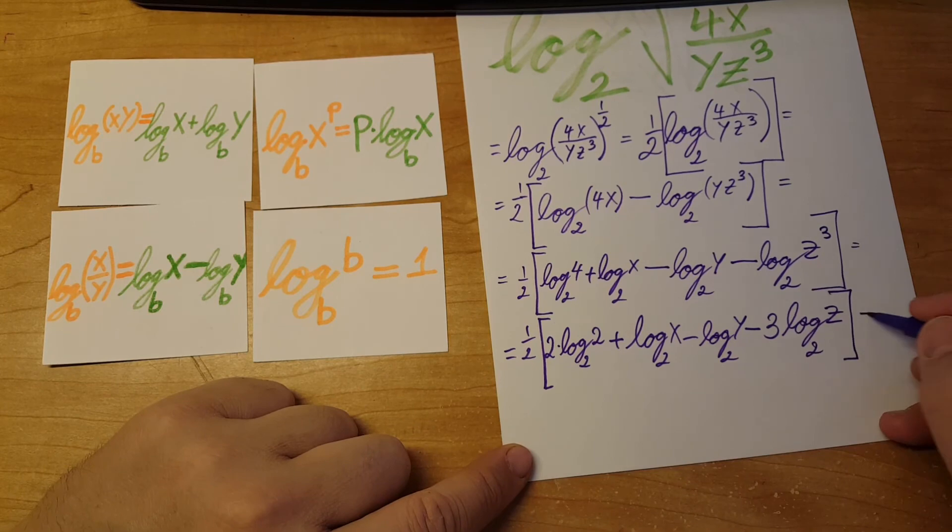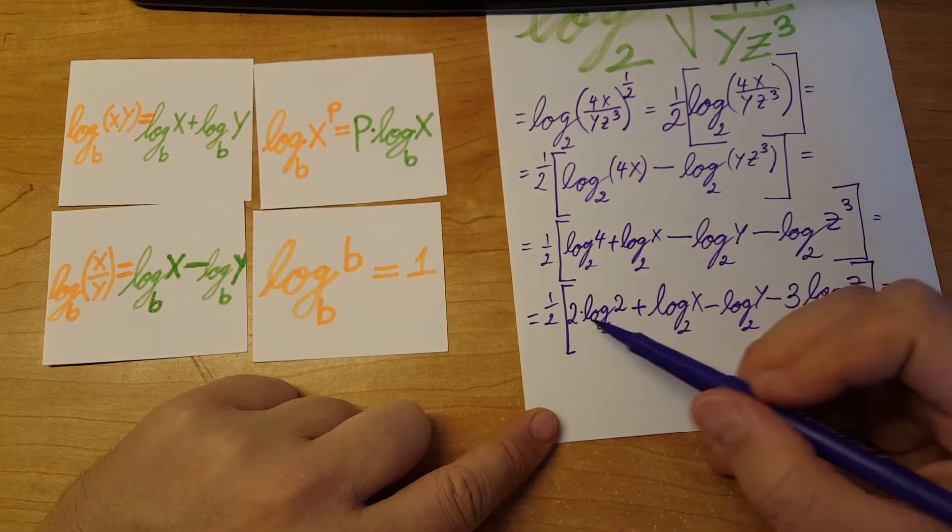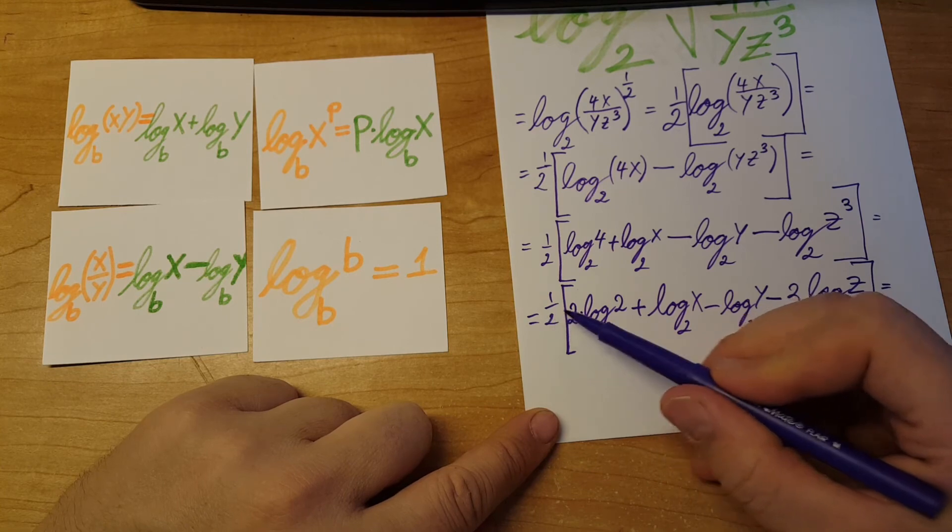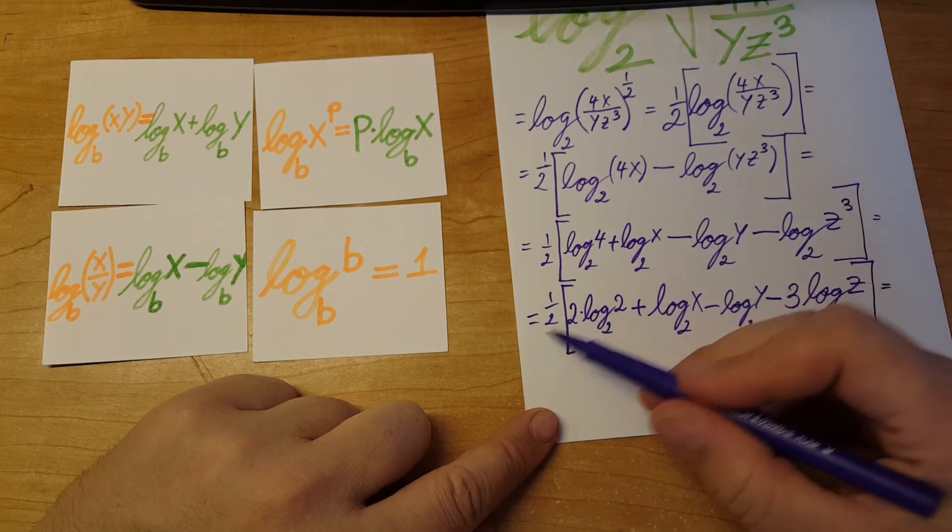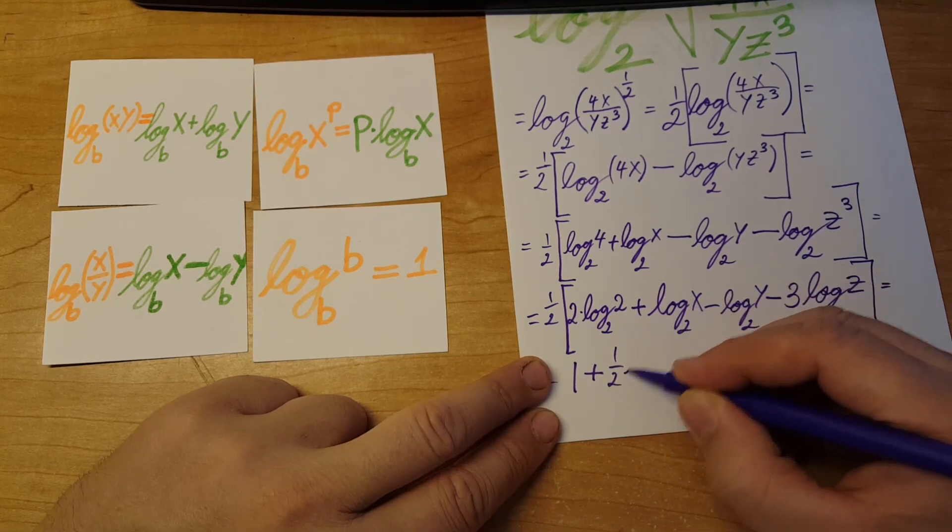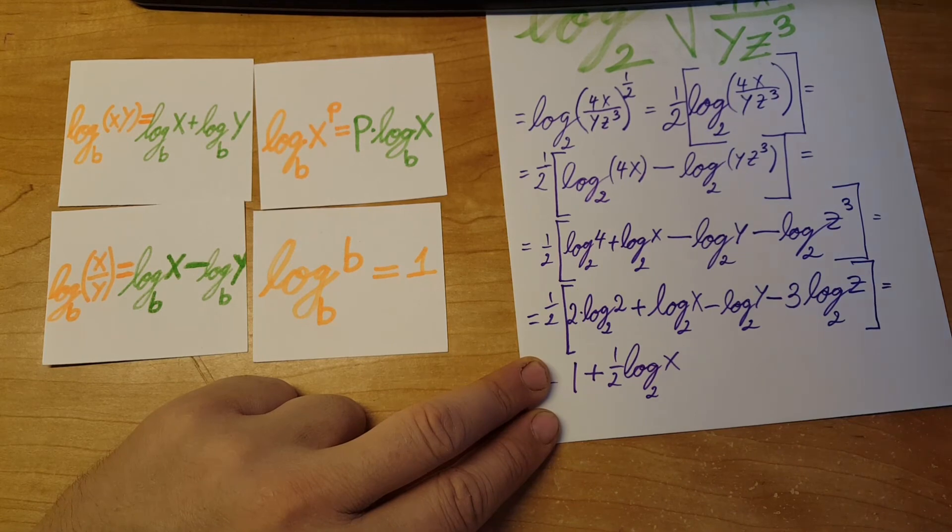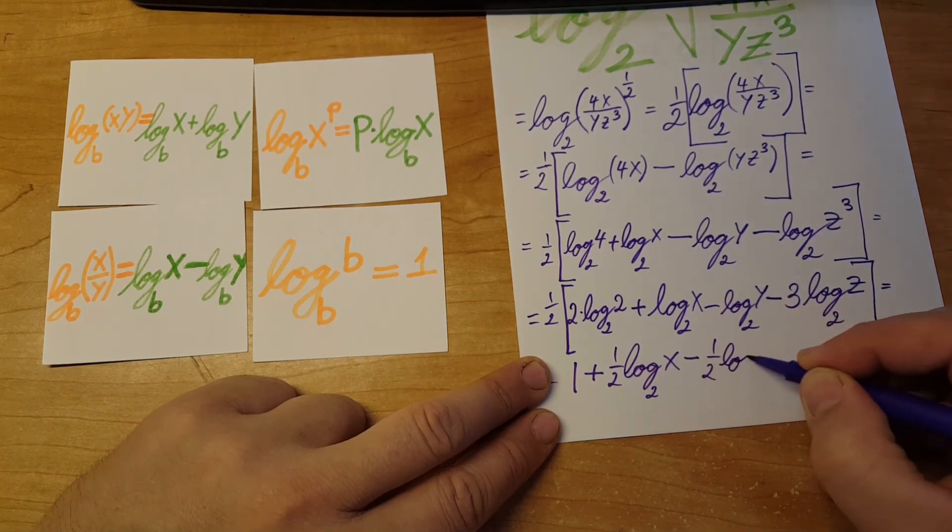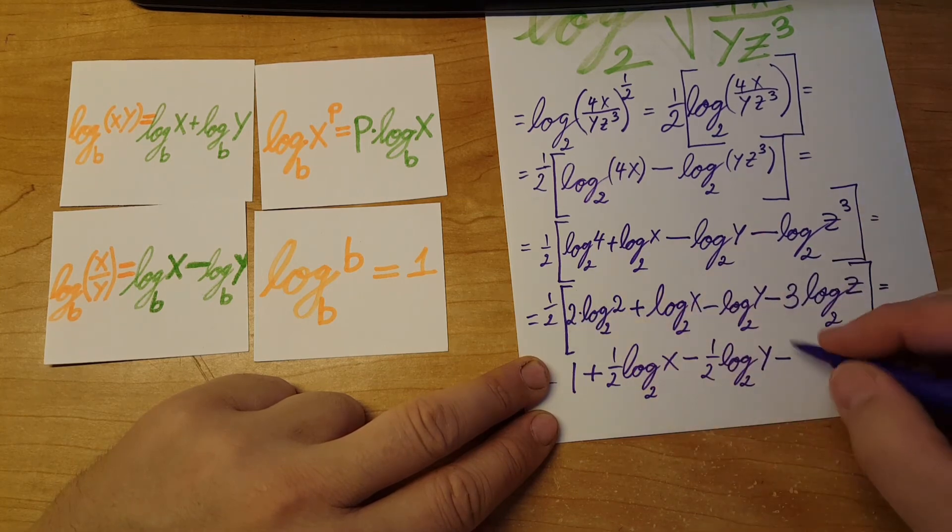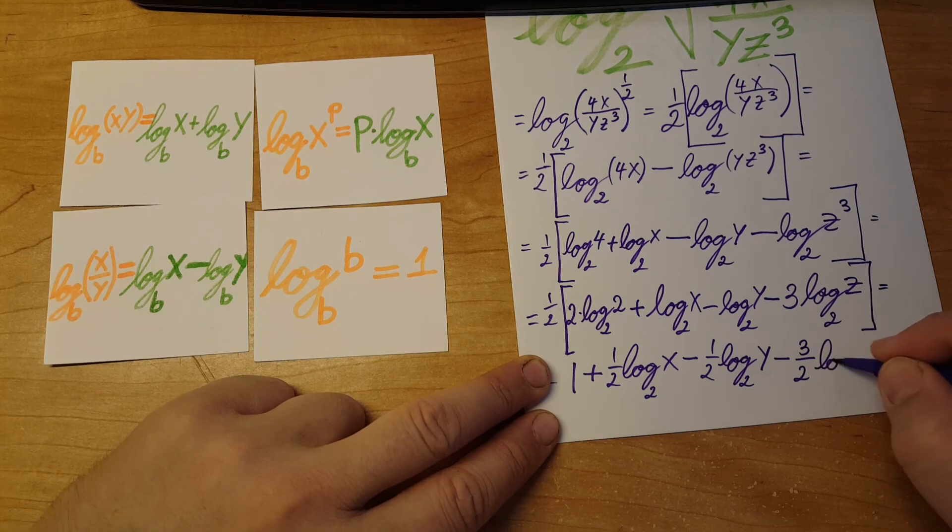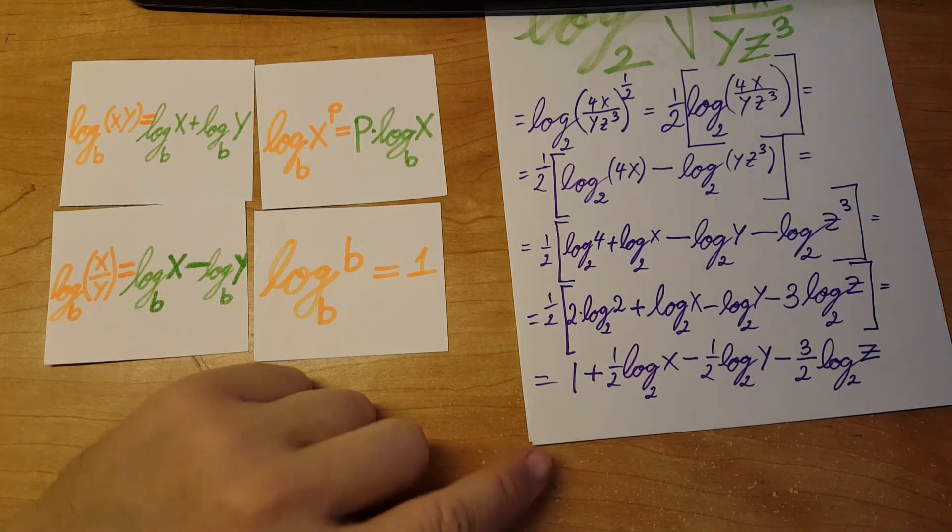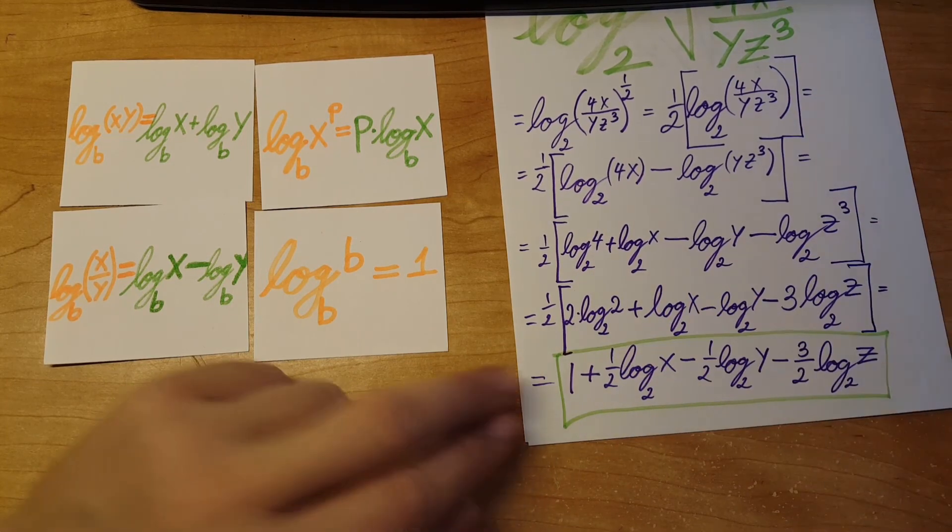Now last line, let's distribute the one-half. Here we're going to have 2 times one-half, so the twos cancel out and it will be just 1. So: 1 plus one-half log base 2 of x minus one-half log base 2 of y minus three times one-half, so three-halves log base 2 of z. And there you go, this is our final answer. There is nothing else left that we can simplify or reduce.